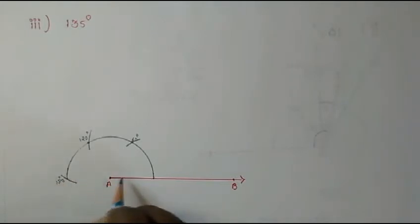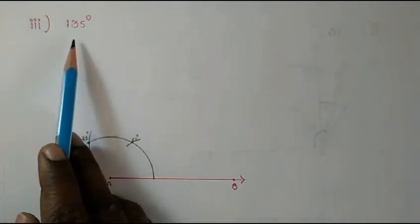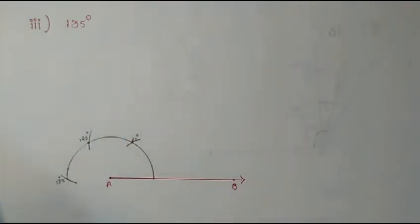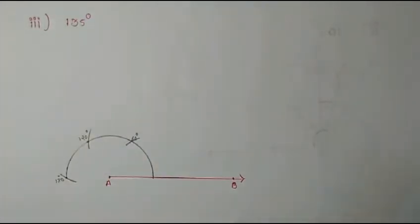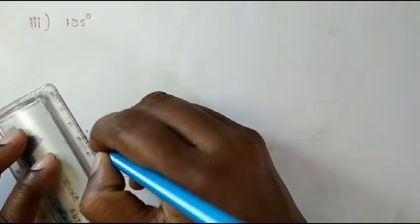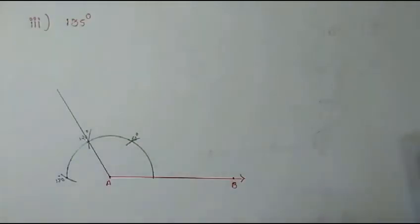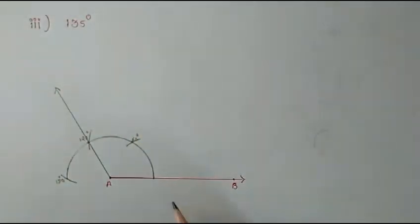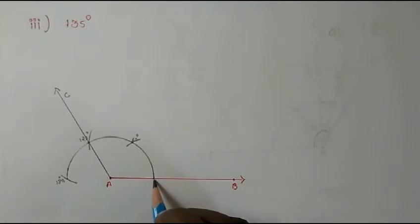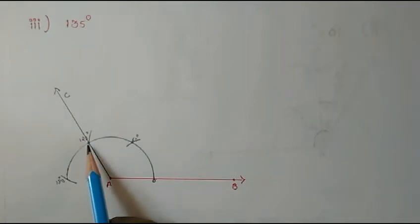So this point is 60, this point is 120, and this point is 180 — a straight angle. Our target is 135 degrees, which is more than 120. So first let us join the 120 degree mark. Let's call this point C, so angle CAB is 120 degrees.